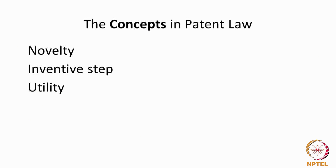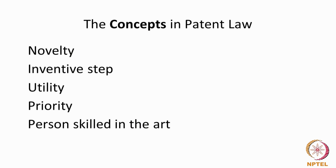Utility — what we also refer to as the invention being capable of industrial application — is yet another requirement that forms the fundamental concepts of patent law. Priority is yet another concept in patent law which determines when a patent right accrues. Person skilled in the art is the person from whose perspective a patent is read and understood.